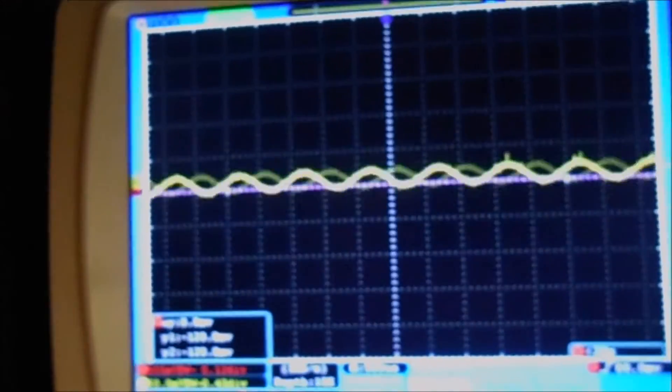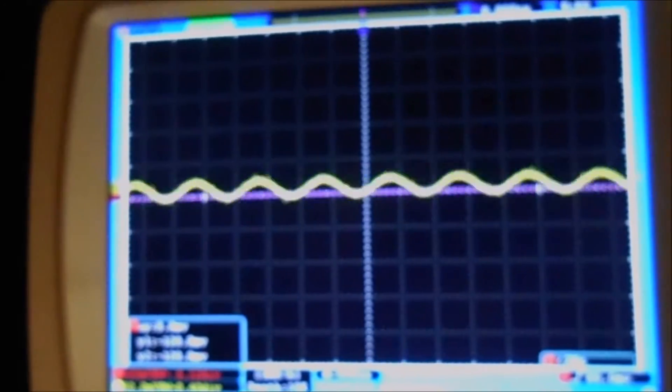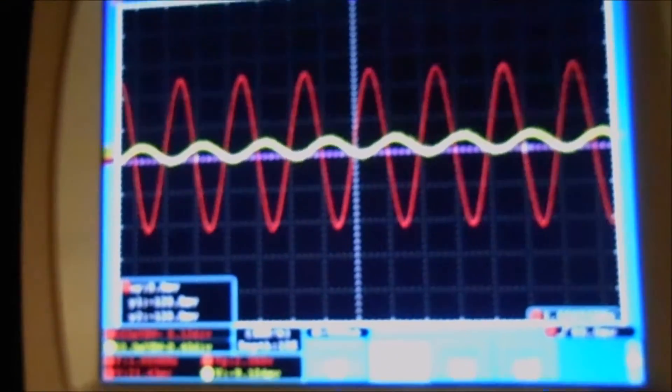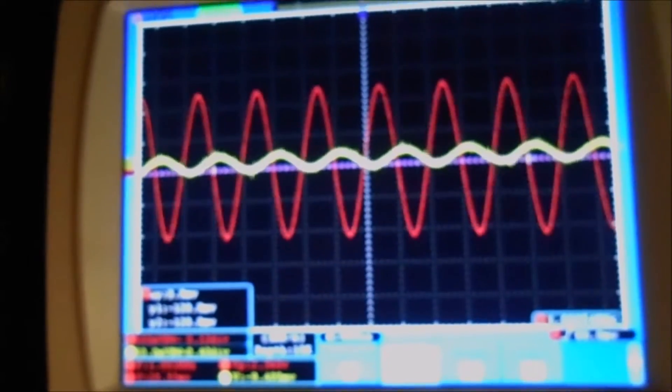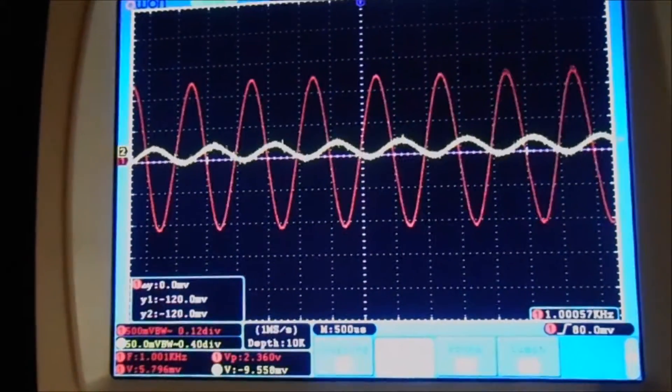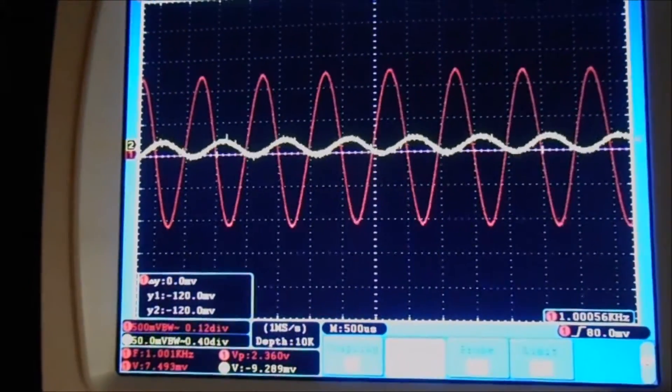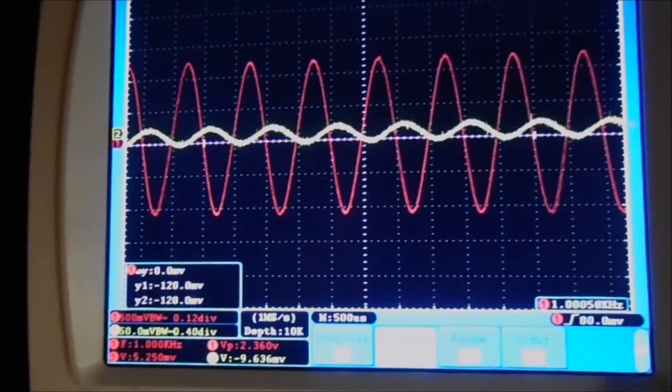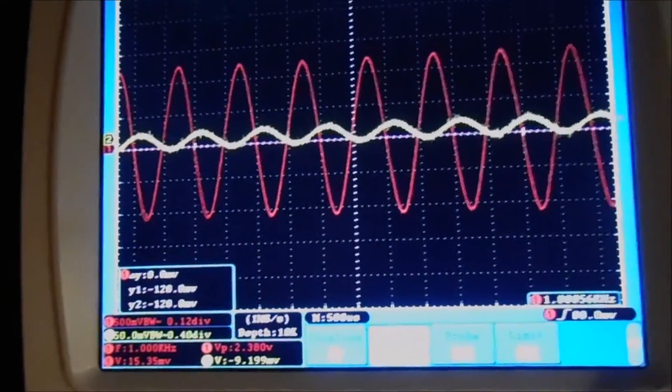Now I'm going to put the speech processor in operation. As you can see, with the speech processor in operation, the red sinus, the output signal, appear with a good signal without any change in amplitude.